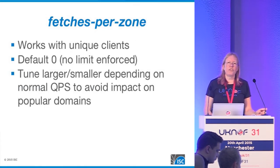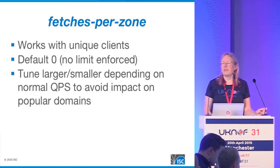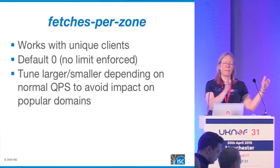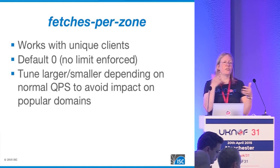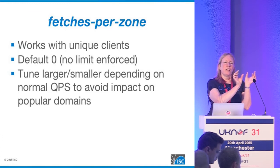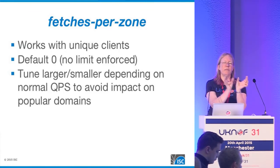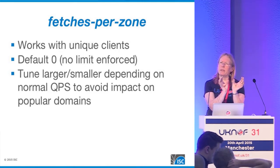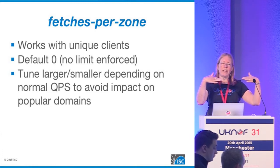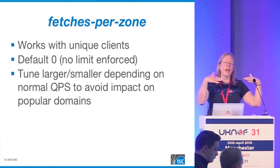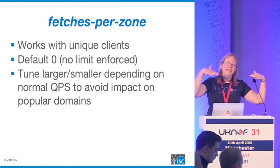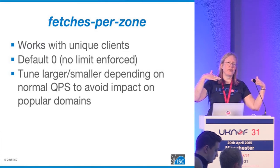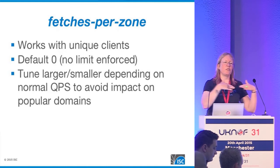The other thing we tried was limiting fetches per zone, but that one is not as sophisticated. The way it works is it takes a query and goes up to the zone above — so if the query is for a random name under a zone, we look above the random label at the zone level. We then set a configurable throttle on how many outstanding queries you are allowed to have for that domain at any one time. But it's a hard limit — it's fixed, it doesn't go up and down. And you can see the effects of that in the graphs, because you can tell which throttle is active based on the backlog of recursive clients.